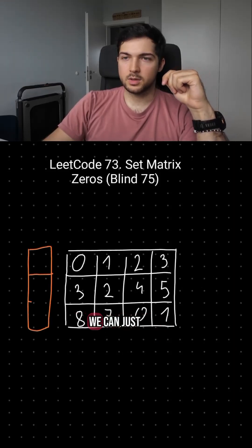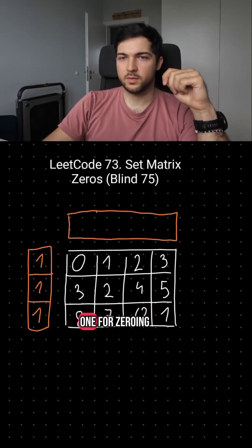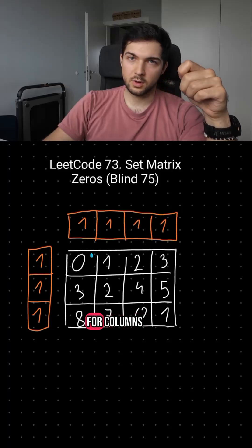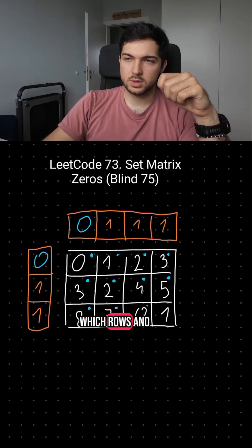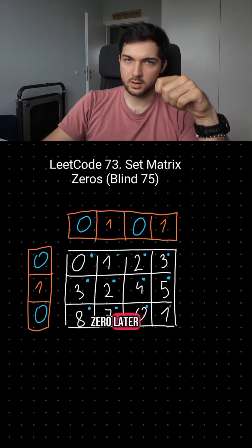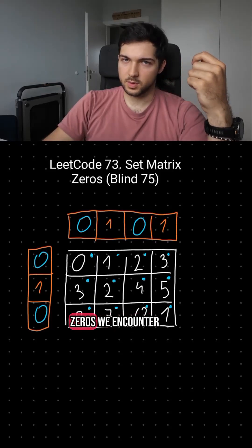To be a bit smarter about it, we can just create two arrays, one for zeroing rows and one for columns. Now let's go through the matrix and just denote which rows and columns we will zero later, based on the zeros we encounter.